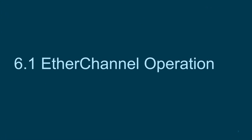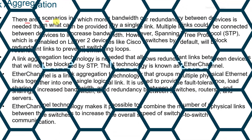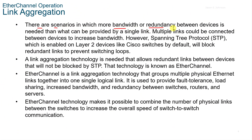6.1 EtherChannel Operation. There are scenarios in networking where more bandwidth or redundancy between devices is needed beyond what can be provided by a single link. Multiple links could be connected between devices to increase the bandwidth. However, the Spanning Tree Protocol, or STP, which is enabled on a Layer 2 device like Cisco switches by default, will block redundant links to prevent switching loops. So a link aggregation technology is needed to allow redundant links between devices that will not be blocked by STP. That technology is known as EtherChannel.